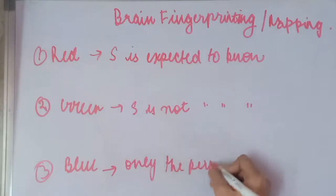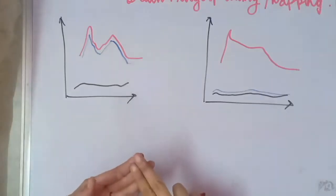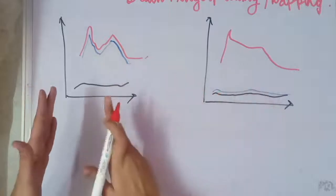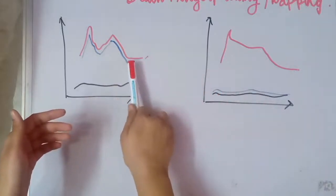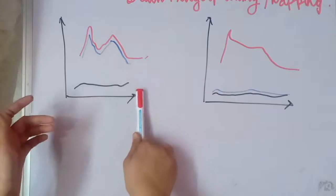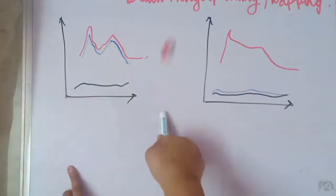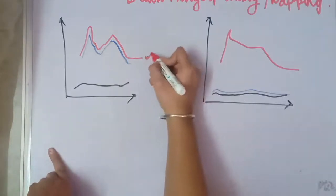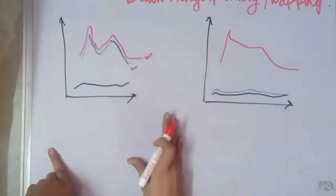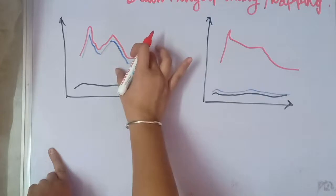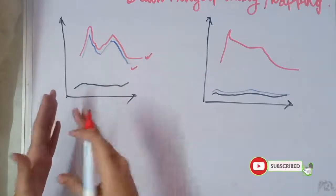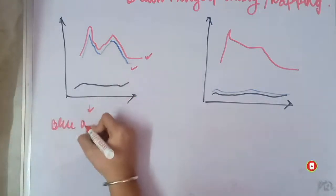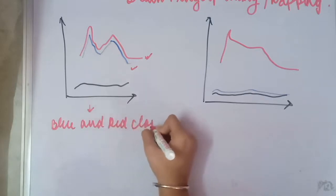These are the two possible kinds of graphs that we can see. Here we have a red line for the pictures that he should be knowing, then we have blue that only the perpetrator will be knowing, and I didn't have a green marker so I used a black marker in its place. In this picture we can see that the red one that he's expected to know and the blue one that only the perpetrator will be knowing are close. If they are close then that means that the person has seen the image before and the suspect knows the crime scene.